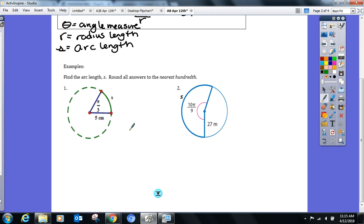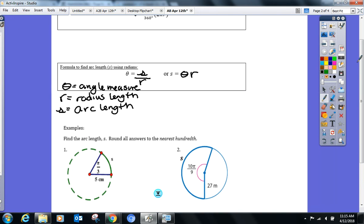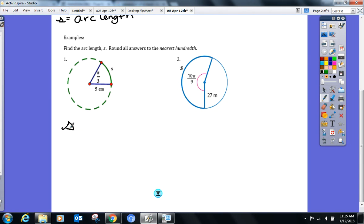If it said 53 degrees, then it'll be degrees. But this is π over 3, that signifies I'm in radians, so I probably want to use the formula. Which one do we want to use as a class? S over R or theta R? Let's go. So the arc length is equal to theta, the angle measure, times the radius. And again, I can only use this formula if the angle's in radians.